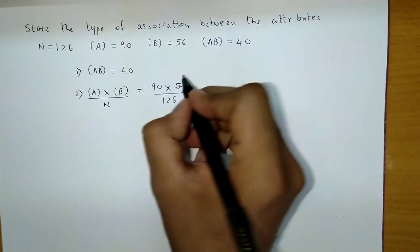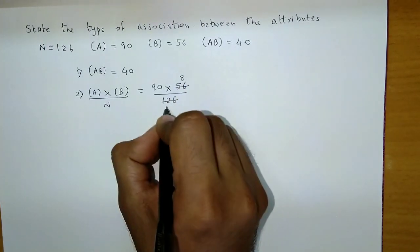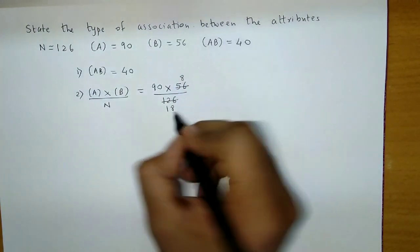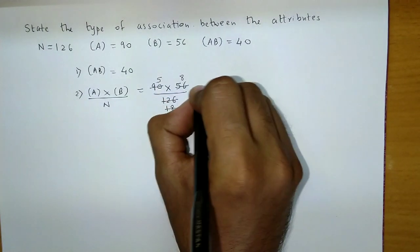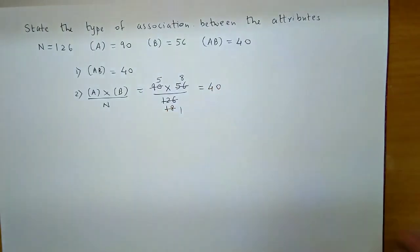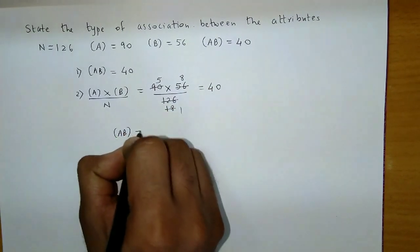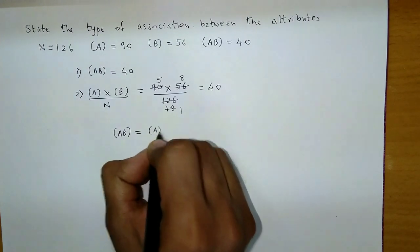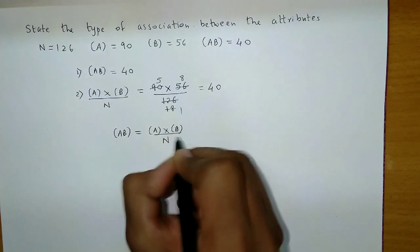So, let's cancel this. Seven times eight, then seven times one, then eighteen times one, and eighteen times five. So, eight fives are, here comes the value of 40. So, if you observe, the frequency of AB and the value A into B upon N, this is equal.